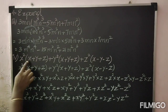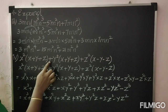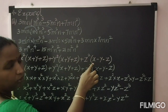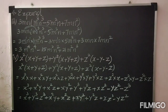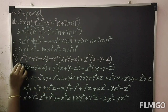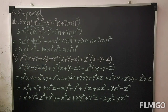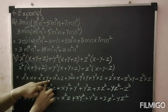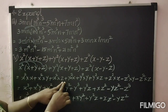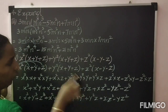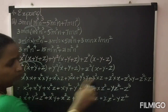Move on to the fourth problem: x² into (x + y + z) + y² into (x + y + z) + z² into (x − y − z). Write the question as it is. Now we are going to multiply x² by these three terms. So: x² into x, plus x² into y, plus x² into z.